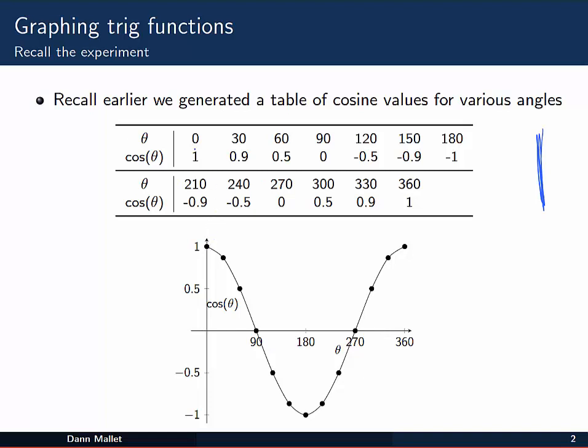If we plot these coordinate pairs as points on the Cartesian plane, as you can see, and then join them with a smooth curve, we're starting to get a picture of what the graph of the cosine function looks like.